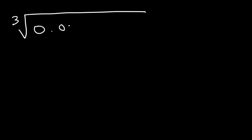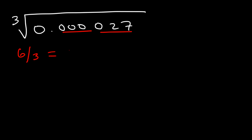Now what is the cube root of 0.000027? Notice that it has 6 digits to the right of the decimal point. 6 divided by the index number 3 is 2. So our final answer should have a total of 2 digits to the right of the decimal point. The cube root of 27 is 3, so the final answer is 0.03.